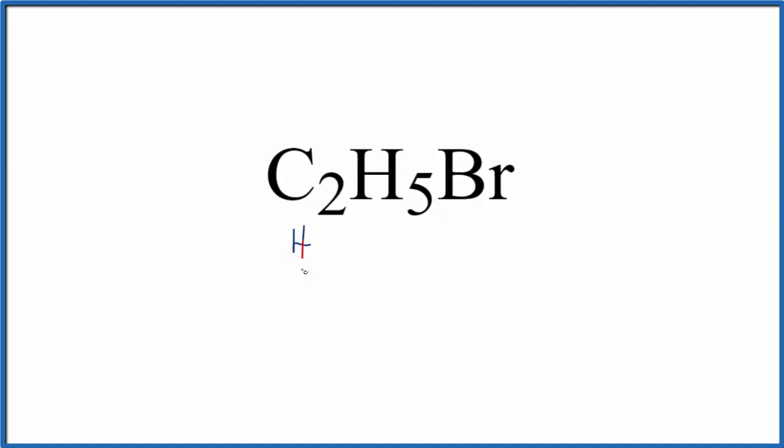Carbon has four, we have two carbon atoms, hydrogen has one, five of those, and then bromine has seven. So we have a total of 20 valence electrons here for the C2H5Br Lewis structure.